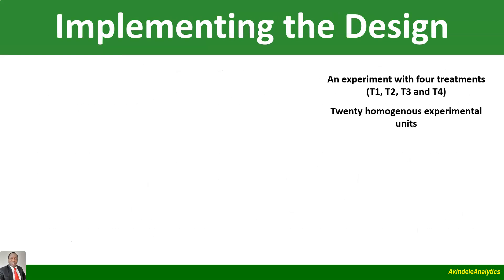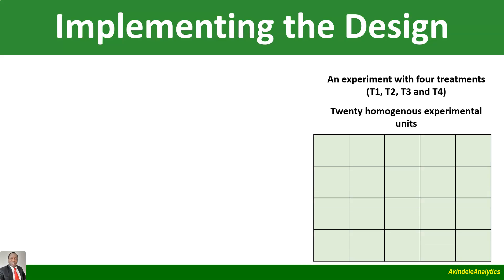Now, how do we implement completely randomized design? We are looking at the design, not the analysis. Let's imagine an experiment with four treatments — T1, T2, T3, and T4 — and we have 20 homogeneous experimental units. You can imagine that the treatments are four different types of fertilizer that we want to apply on crops, with 20 pots for a potted experiment and four different types of fertilizers.